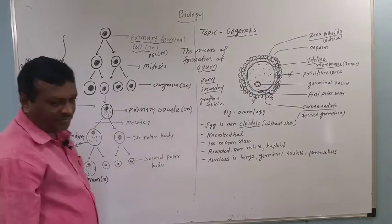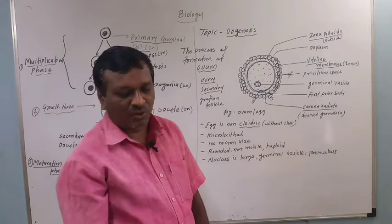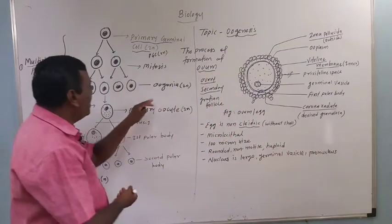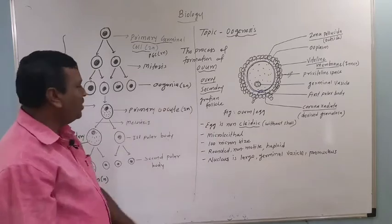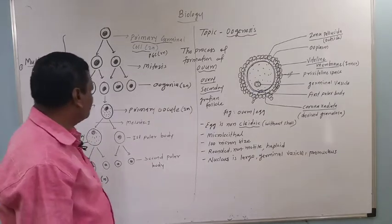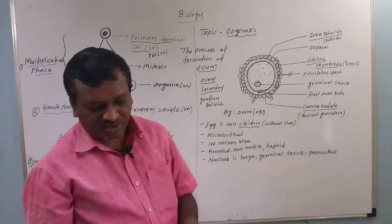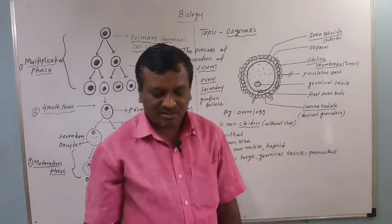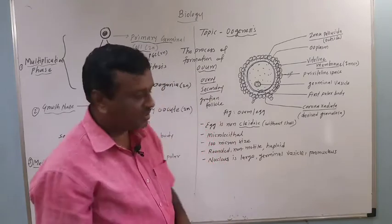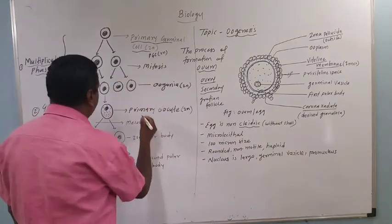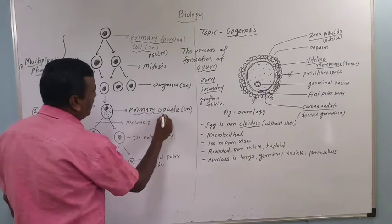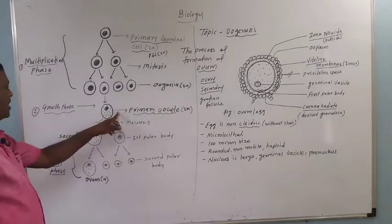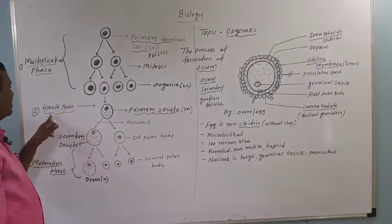The second phase is the growth phase. Oogonia stop dividing, increase their size and shape, and become primary oocytes. There is only growth taking place, and there is formation of primary oocytes. Primary oocytes remain diploid — there is no meiosis at this stage.